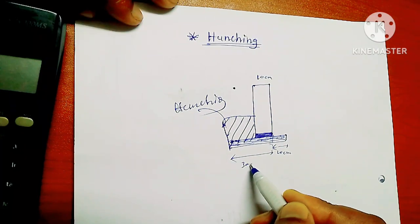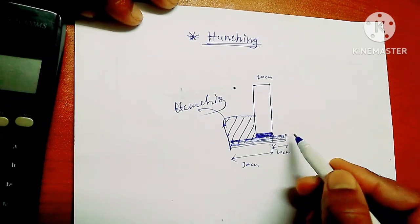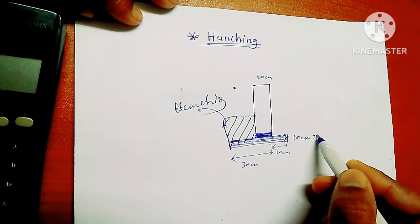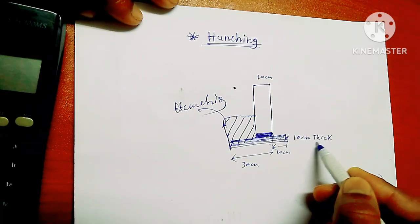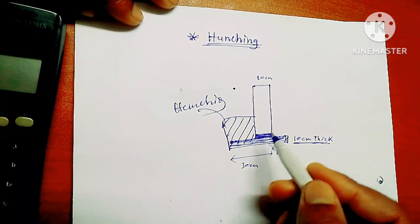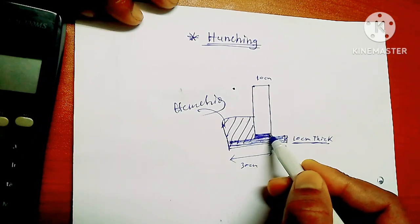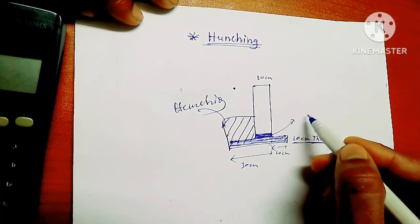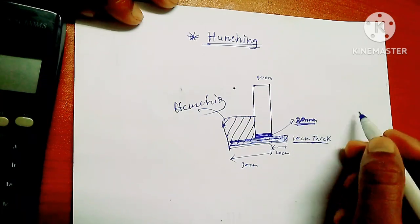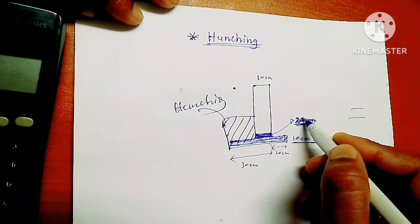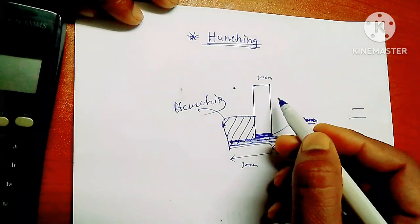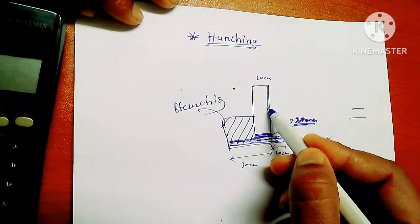And we do PCC with minimum 10cm thickness. We will do 10cm thickness. After we do the PCC, then here mortar is applied. Mortar, let's say our mortar is 20mm. 20mm is our mortar thickness.